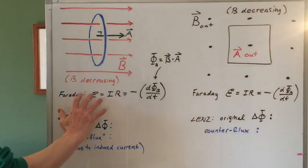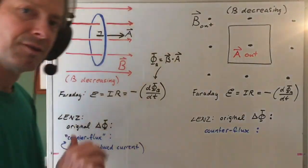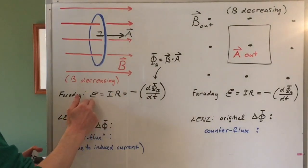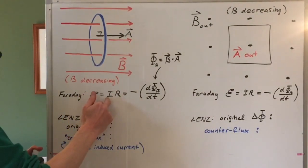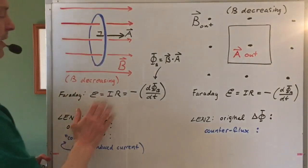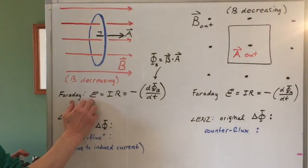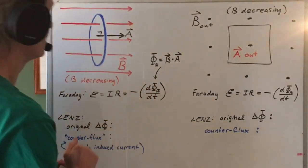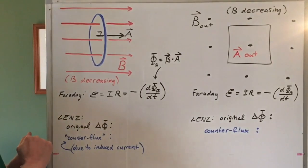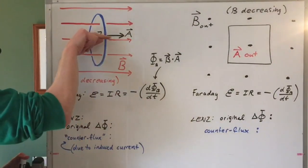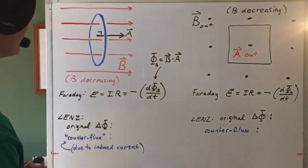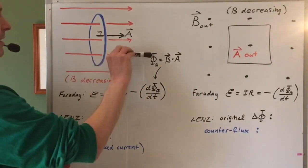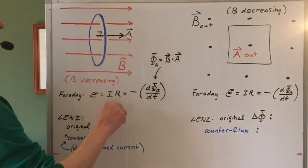Let's use Faraday's law sign conventions first to figure out the direction of the induced current. I could set the induced voltage equal to the current passing through this loop multiplied by a resistance, and Faraday's law says the induced voltage must be the negative of the rate of change of magnetic flux through that loop with respect to time. I'm going to pick an area vector, which I've picked to the right. The flux itself is the dot product of the magnetic field vector and the area vector — those are in the same direction.